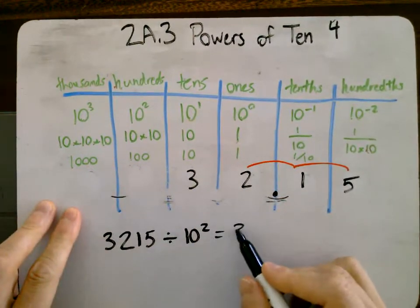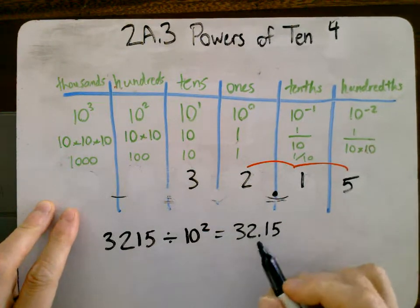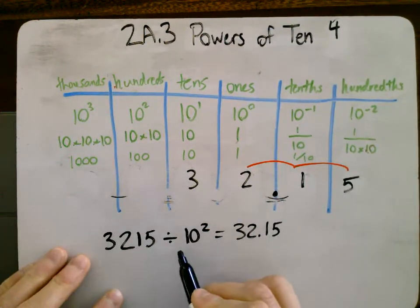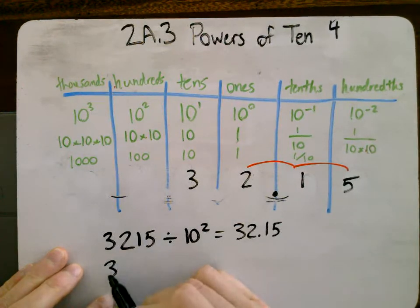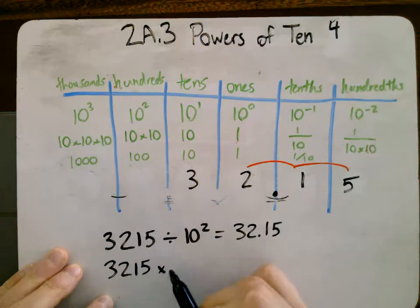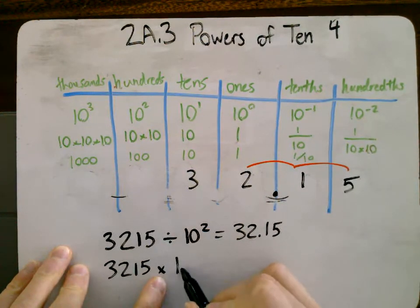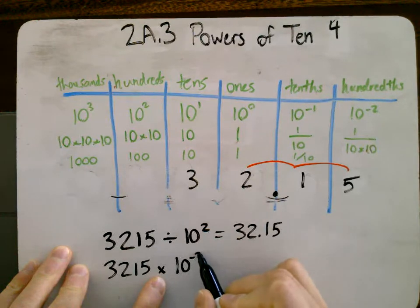All right, so this is equivalent to 32.15. Another way of saying this is 3215 times—if I change the division to times and I also change the power to negative...